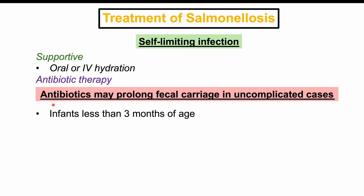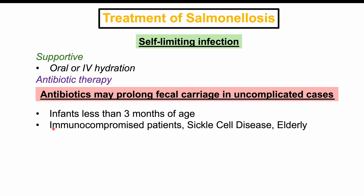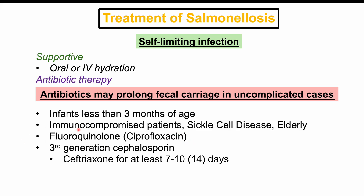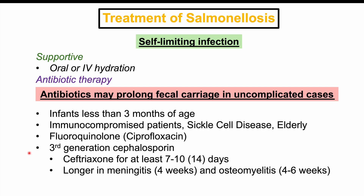Antibiotics should be given to infants less than 3 months of age, immunocompromised patients, sickle cell disease patients, and elderly patients. We typically start with a third-generation cephalosporin such as ceftriaxone for at least 7 to 14 days, then narrow down to a fluoroquinolone like ciprofloxacin once culture and sensitivity results return. Duration is longer in specific complications: four weeks or longer for meningitis, and four to six weeks for osteomyelitis.